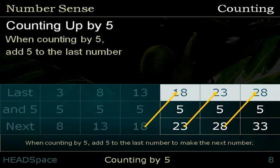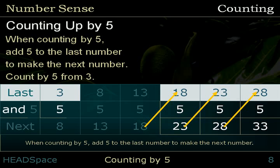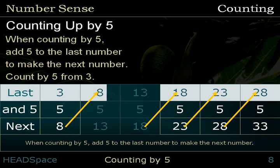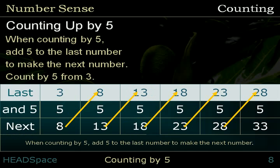When counting by 5, add 5 to the last number to make the next number. Count by 5 from 3. Last number: 3. And 5. Next number: 8. Last number: 8. And 5. Next number: 13. Last number: 13. And 5. Next number: 18.